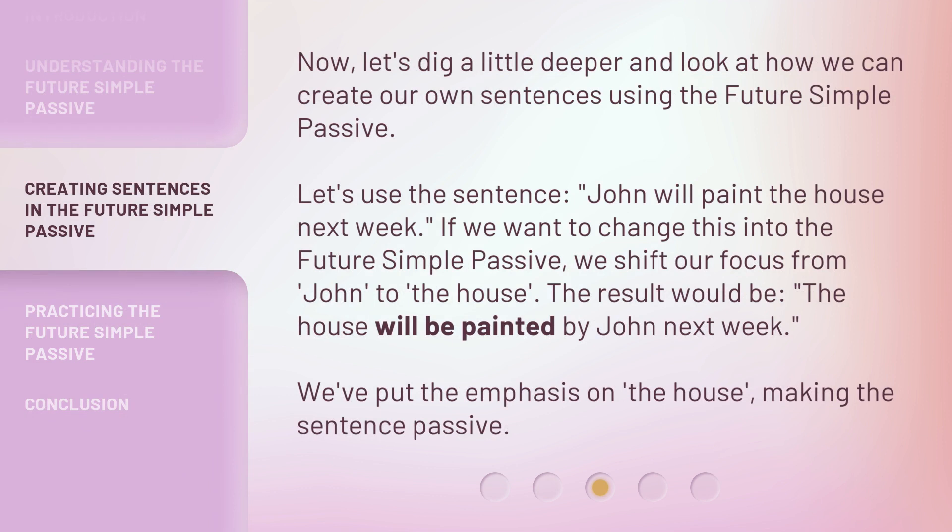Now, let's dig a little deeper and look at how we can create our own sentences using the Future Simple Passive. Let's use the sentence: John will paint the house next week. If we want to change this into the Future Simple Passive, we shift our focus from John to the house. The result would be: the house will be painted by John next week. We've put the emphasis on the house, making the sentence passive.